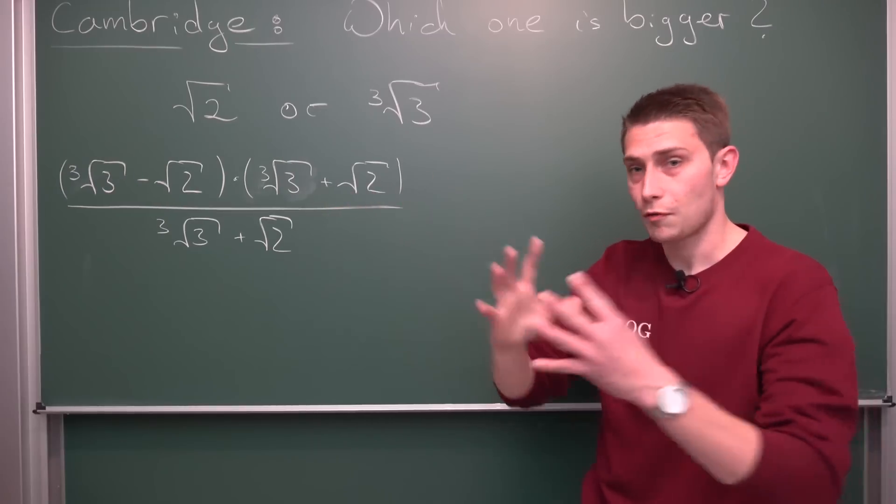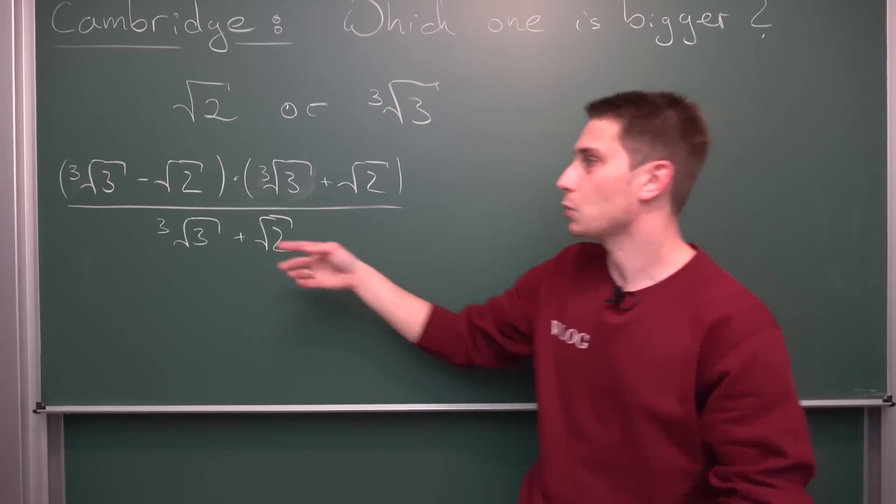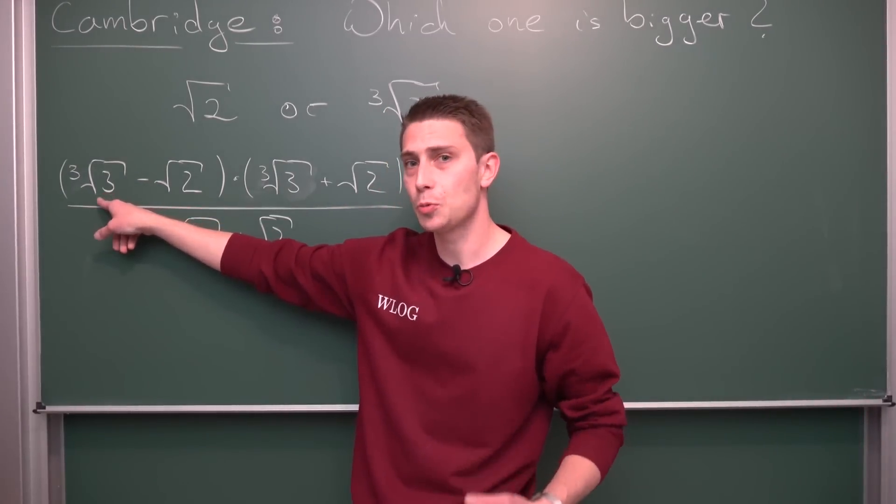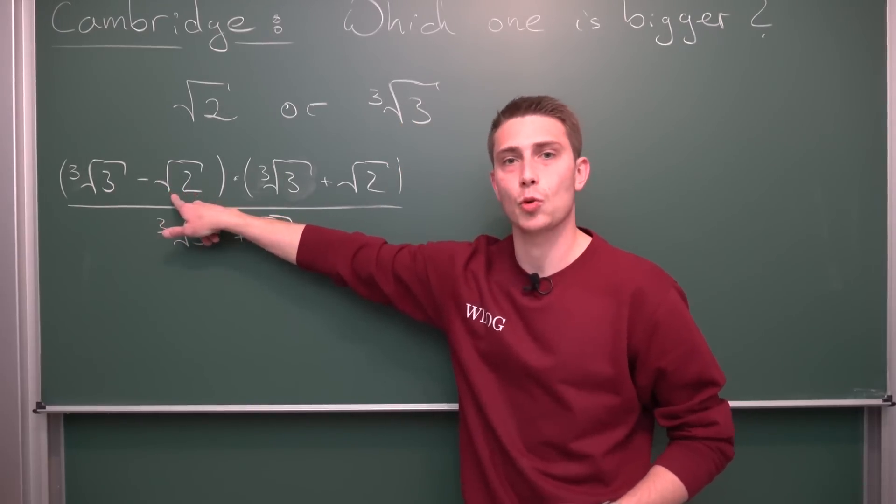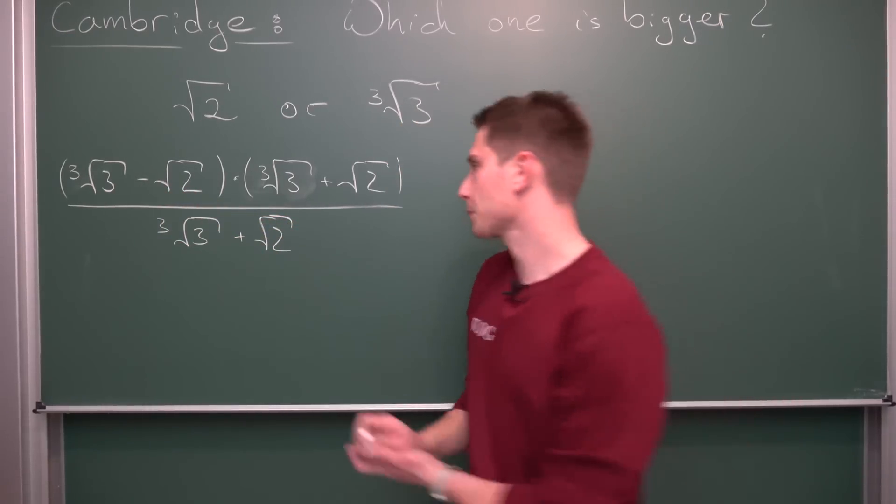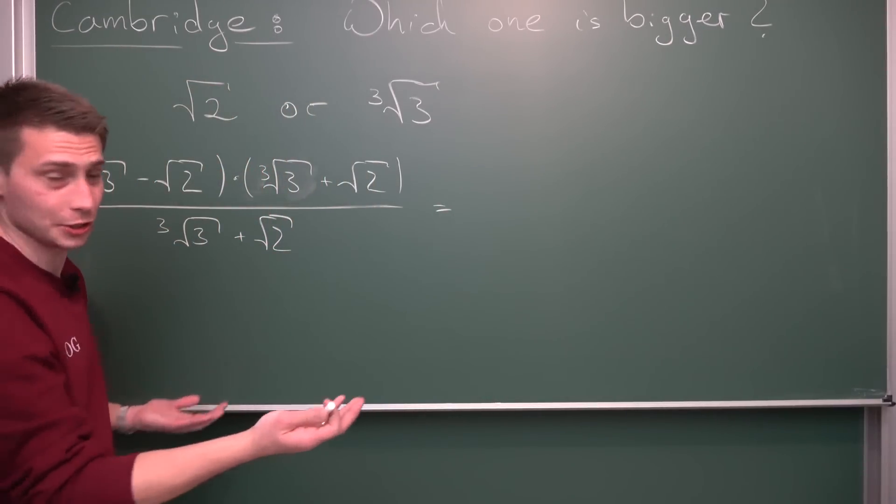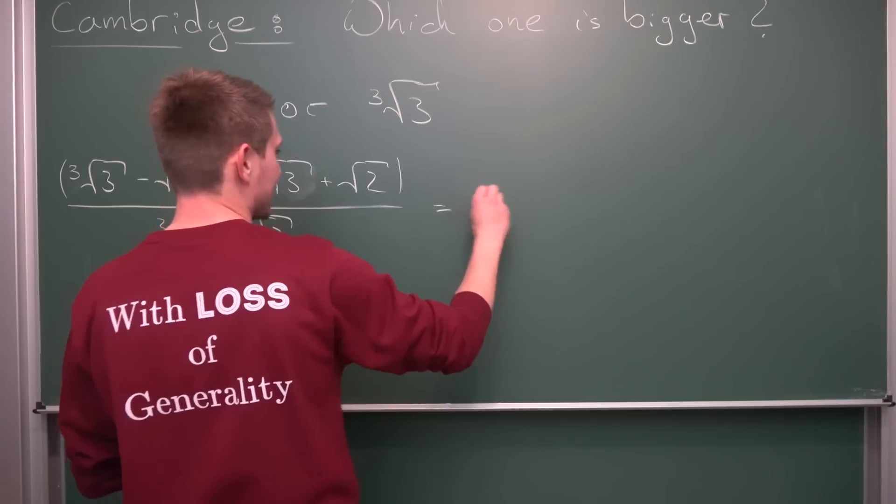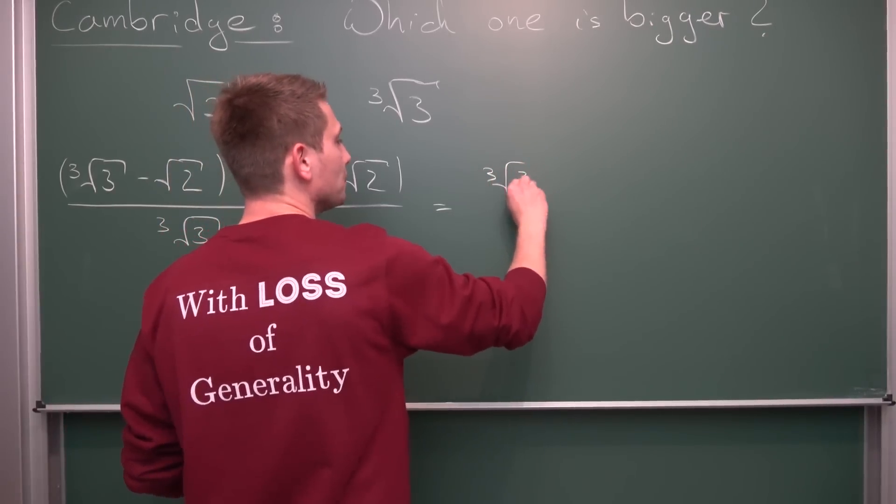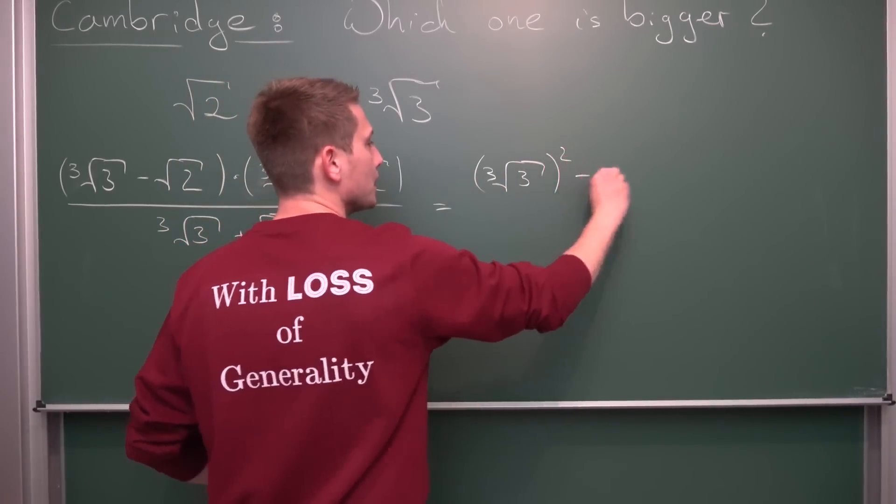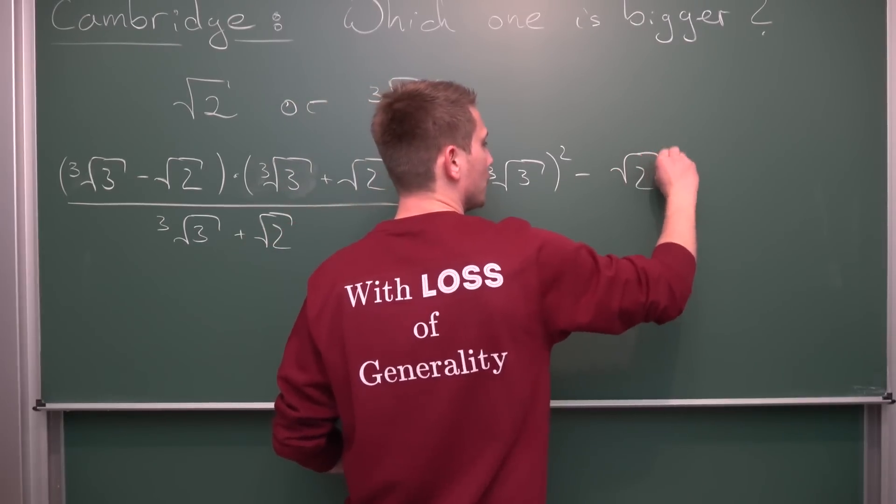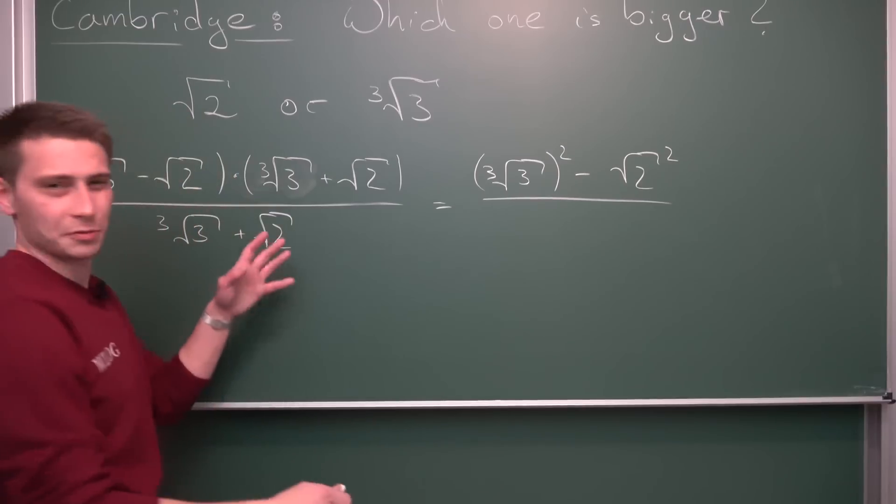Now if we were to multiply everything out, we are going to get a squared, where a is the cube root of 3, minus b squared, where b is the square root of 2. Meaning in the process what we are going to get, and we didn't change anything on the original difference, which is a really cool thing, very elegant, we're going to get the cube root of 3 squared minus the square root of 2 squared divided by all of the other stuff.